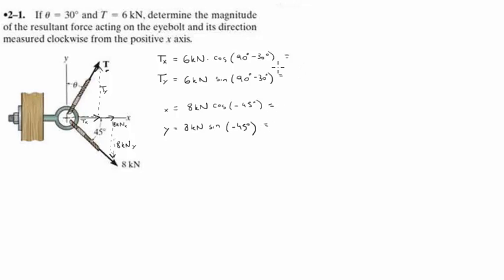Now we take out our calculators and we calculate it. 6 times the cosine of 60, so this one will be 3 kN. 6 times the sine of 60, so this one will give you 5.2 kN. 8 times the cosine of negative 45 is 5.7 kN. And 8 times the sine of negative 45 is negative 5.7 kN.